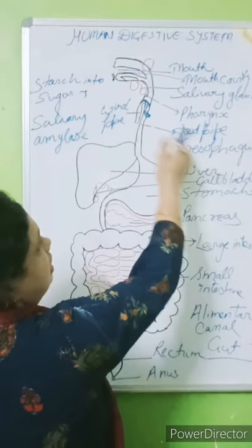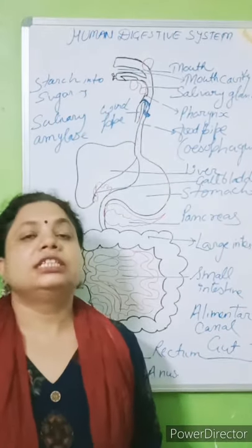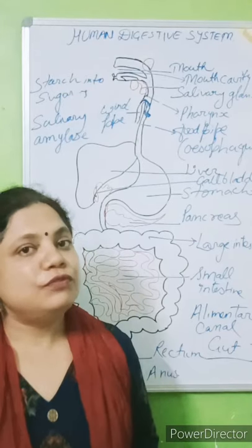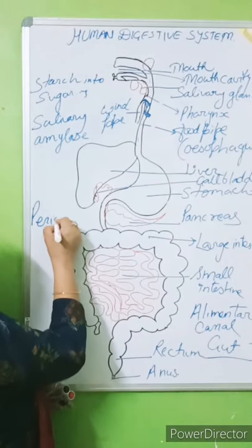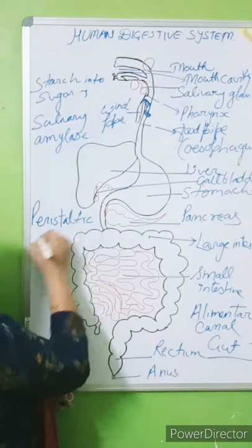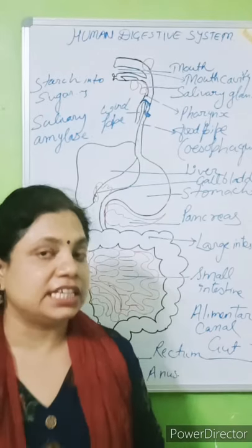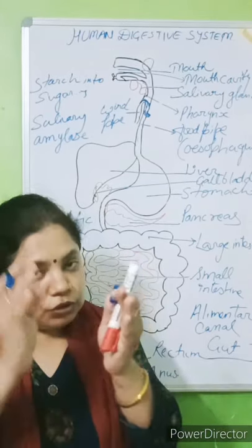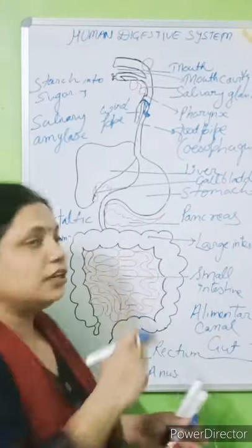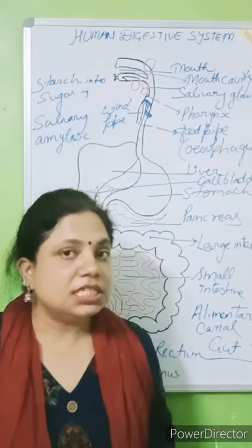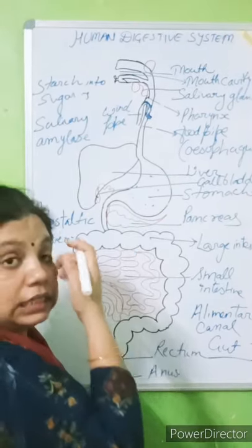After that, the food passes from the esophagus into the stomach. There is a movement that helps pass the food, called peristaltic movement. Peristaltic movement means the contraction and expansion of the muscles, so food passes from one part to another. The food then enters the stomach.